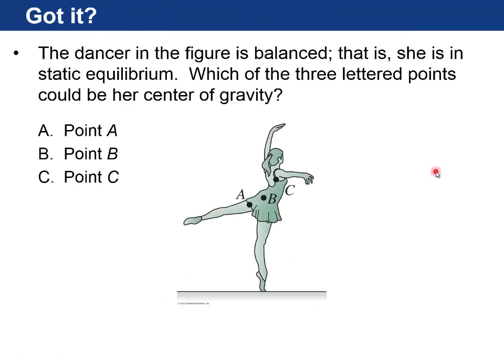Let's do another question. The dancer in the figure is balanced, so she's in static equilibrium. Which of the three-lettered points, A, B, or C, do you think is her center of gravity? Let me pause it and think about that, and I'll tell you the answer. It was point B. So the idea there is that gravity is going to pull downwards at the center of gravity, and there's a pivot point, which is her toe, down here. So it's only B that will have a zero net torque, gravity torque, around that pivot point, and so she won't rotate.